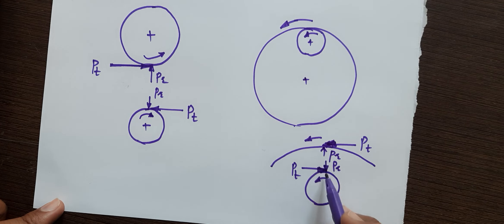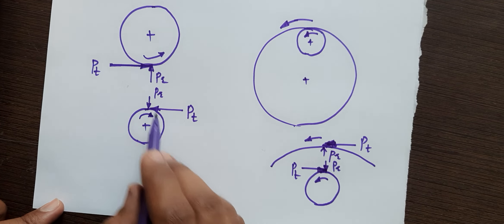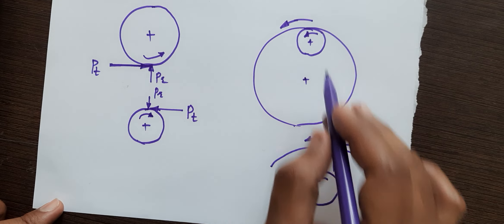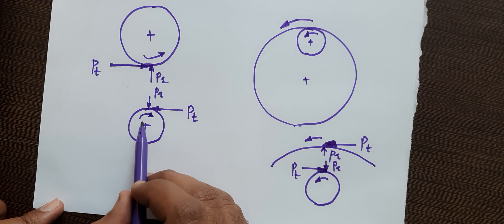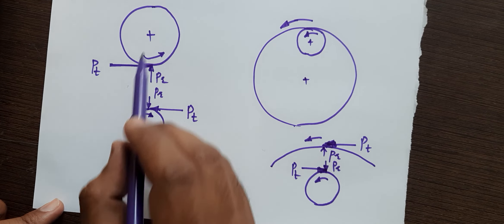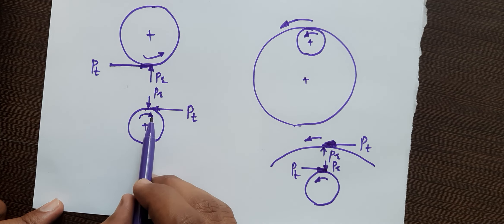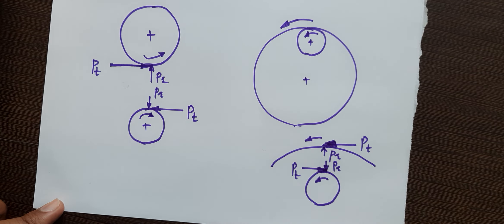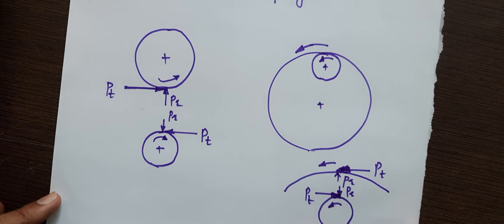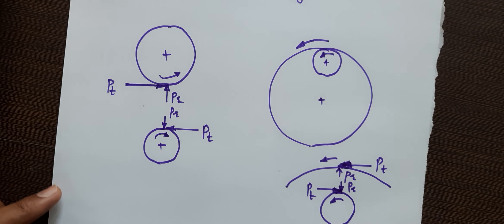The difference between external and internal gear pairs is in the radial force direction only; the concept of tangential force is the same for both gear pairs. On the driven member, the tangential force assists the rotation; on the driving member, the tangential force opposes the rotation. In this way you can find the direction of the tangential and radial components.